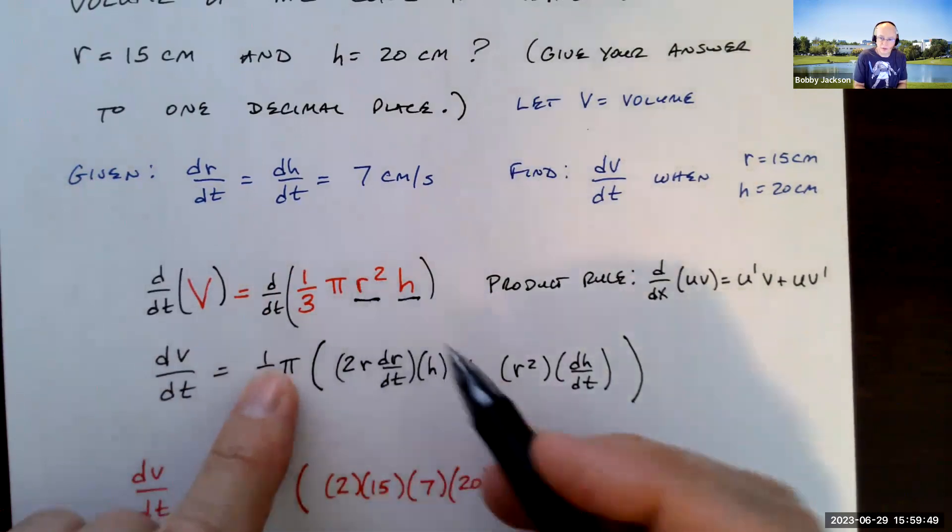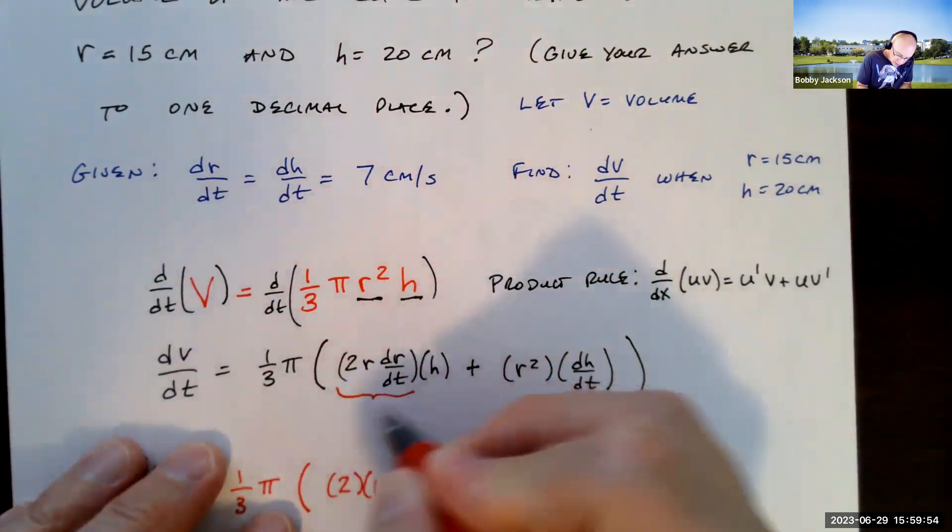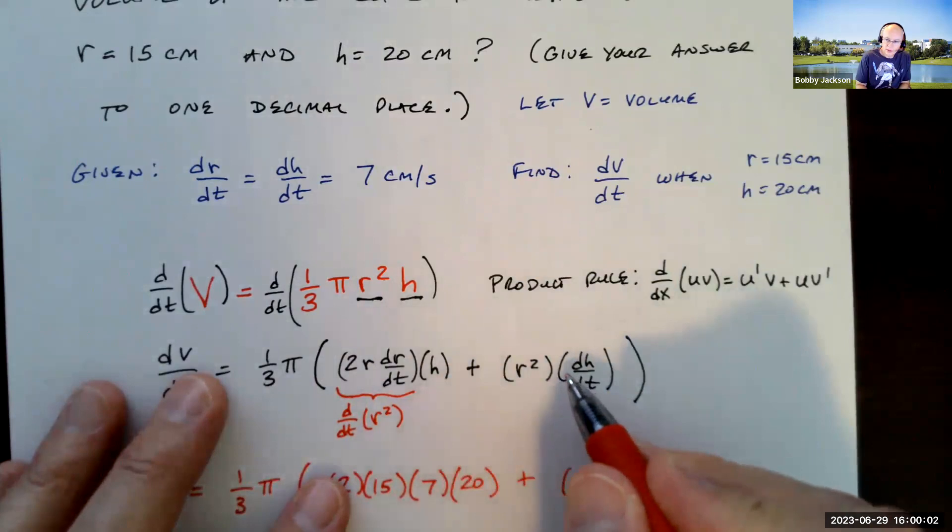So there's the derivative of r squared. So this right here is the derivative of r squared with respect to time times h plus r squared times the derivative of h with respect to time, which is just dh/dt.